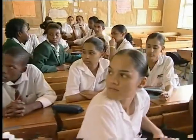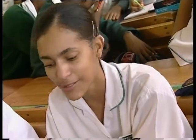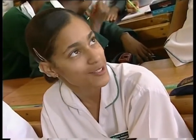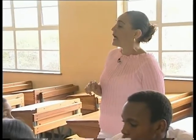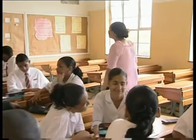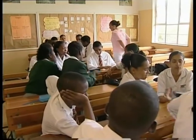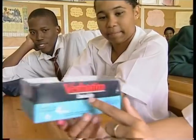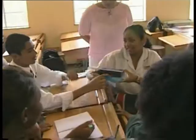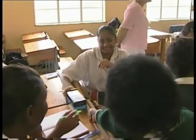The teacher begins by discussing the properties of the box. Learners note that two opposite sides are equal. She asks what shape the surfaces are and how they know it's a rectangle — the opposite sides are equal. She then asks how many surfaces the box has, and learners count: two, four, six — it has six surfaces.